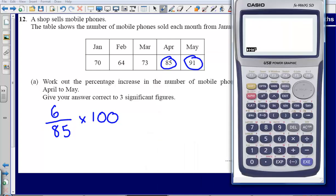So let's do that. 6 divided by 85, then multiply that by 100, and that gives us an answer of 7.058823529.